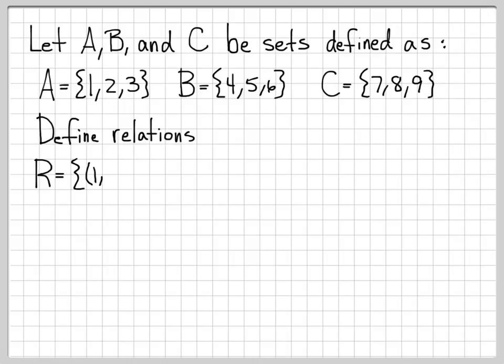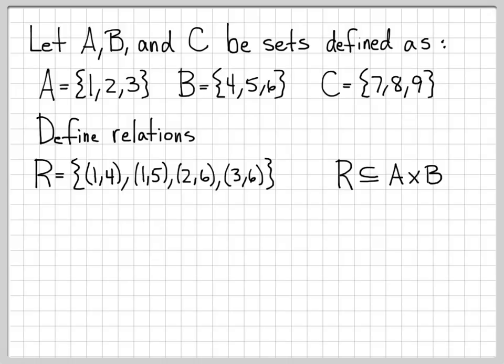We're going to define some relations. One of the relations we're going to call R, and R is the set that consists of these four pairs: (1,4), (1,5), (2,6), and (3,6). Just by looking at this, we see that the first coordinate of each pair always comes from set A — those are 1, 1, 2, and 3 — and the second coordinate always comes from set B. So R is a relation from A to B, since R is a subset of the Cartesian product A×B.